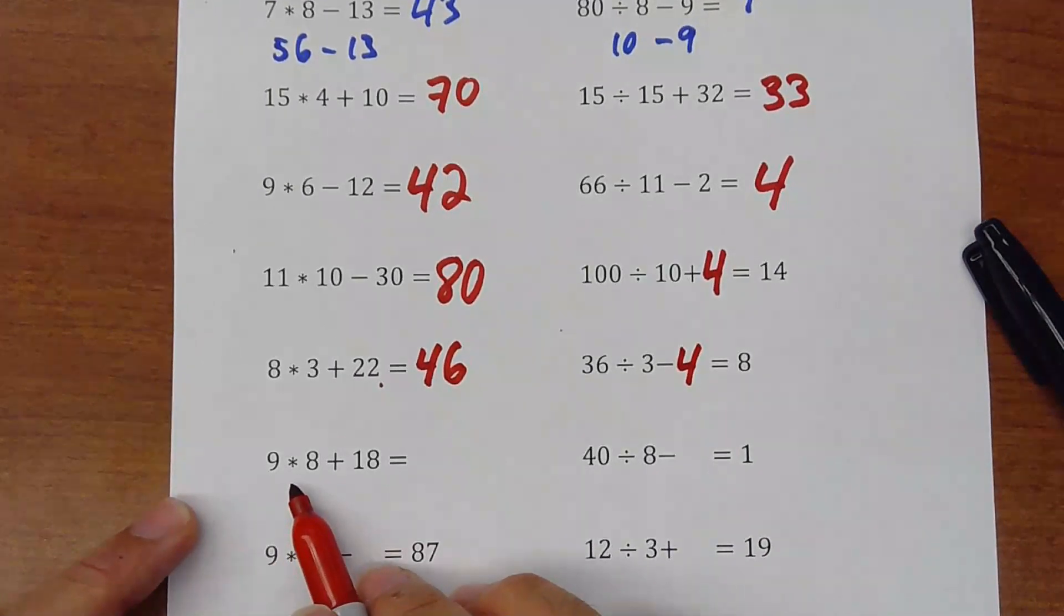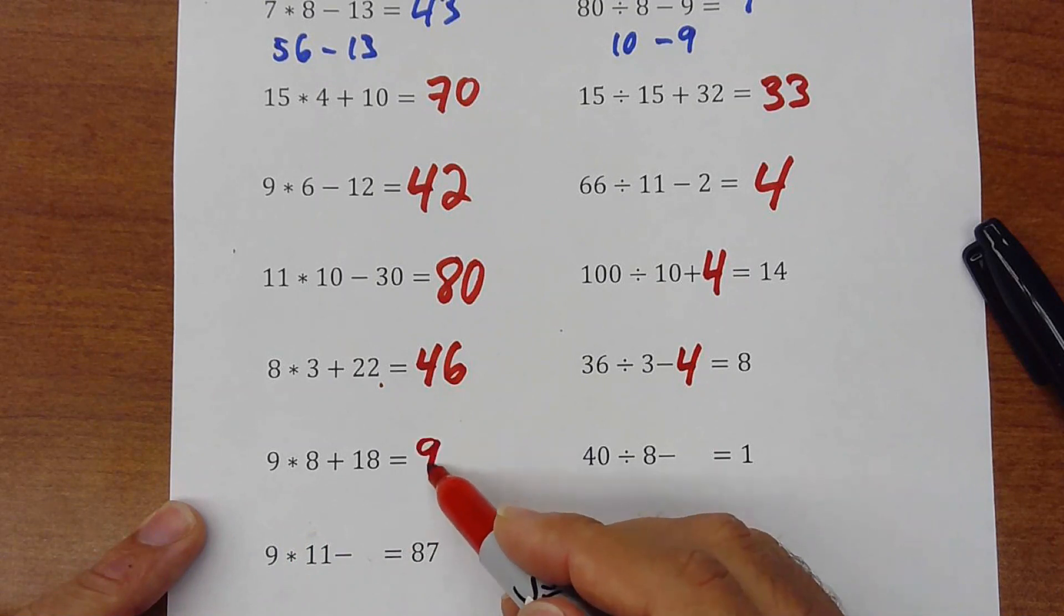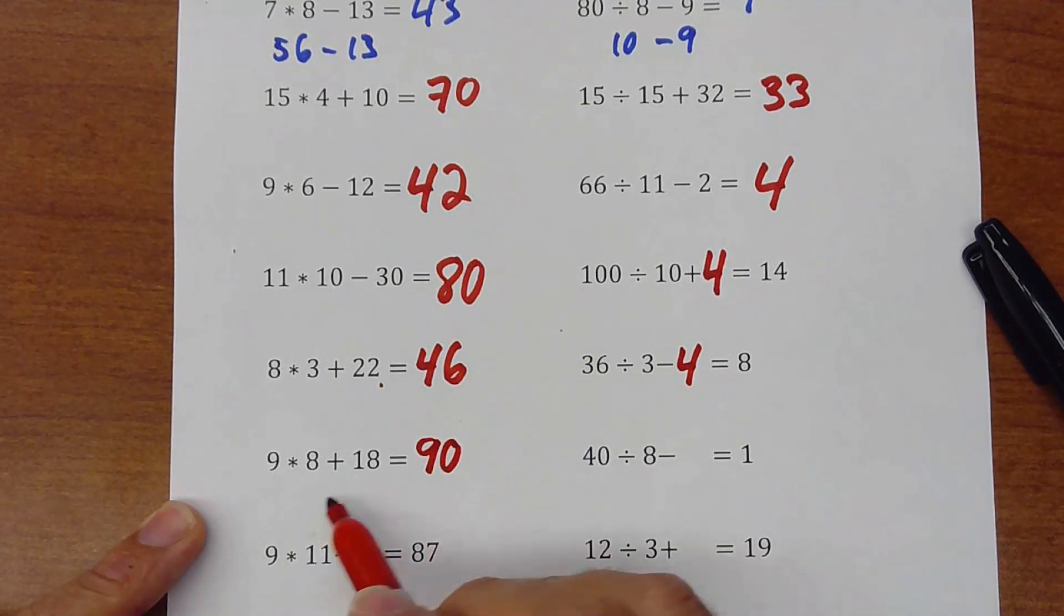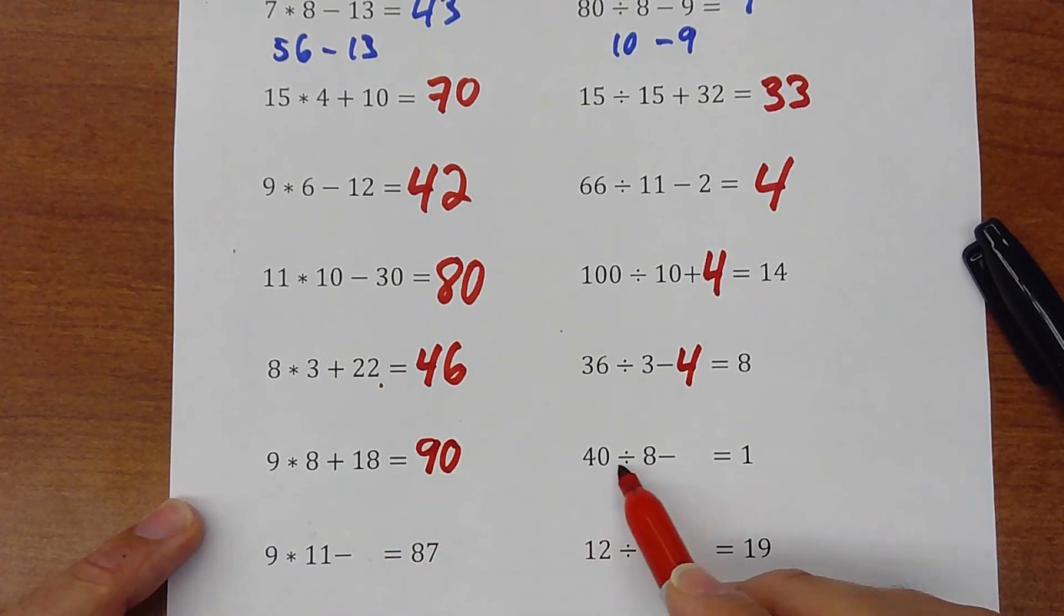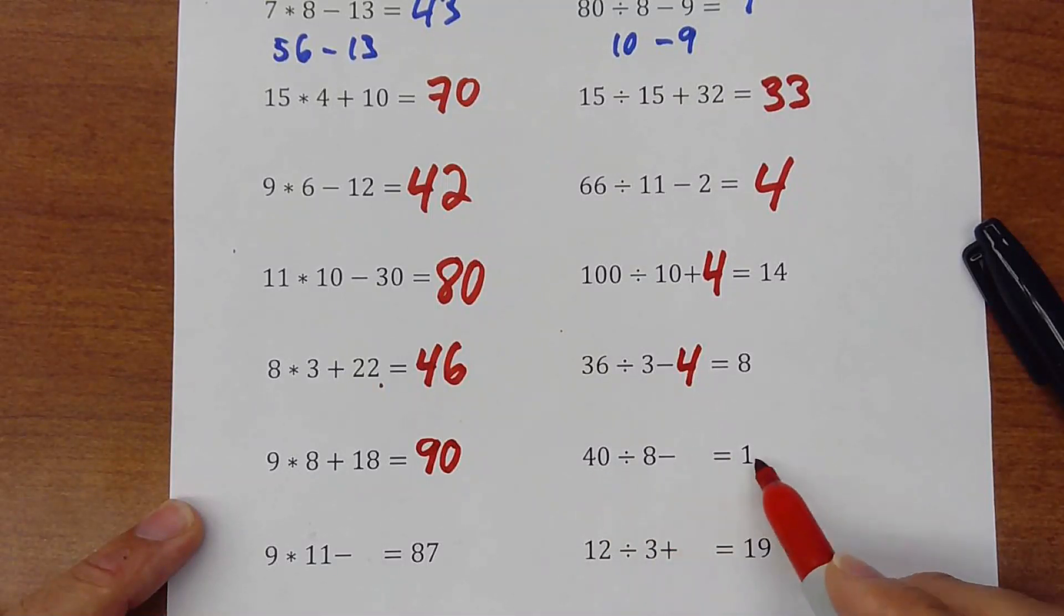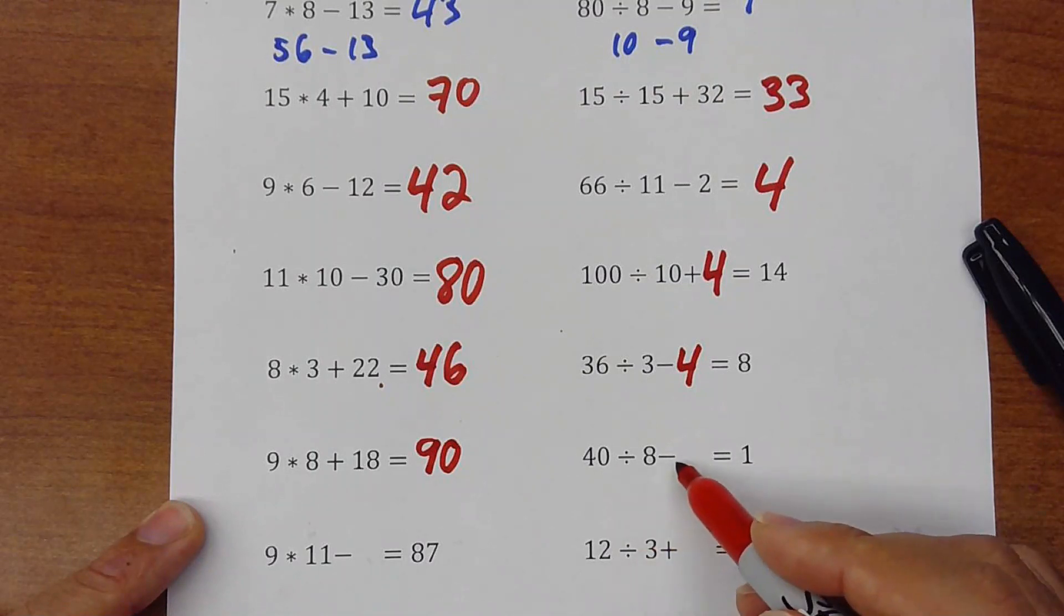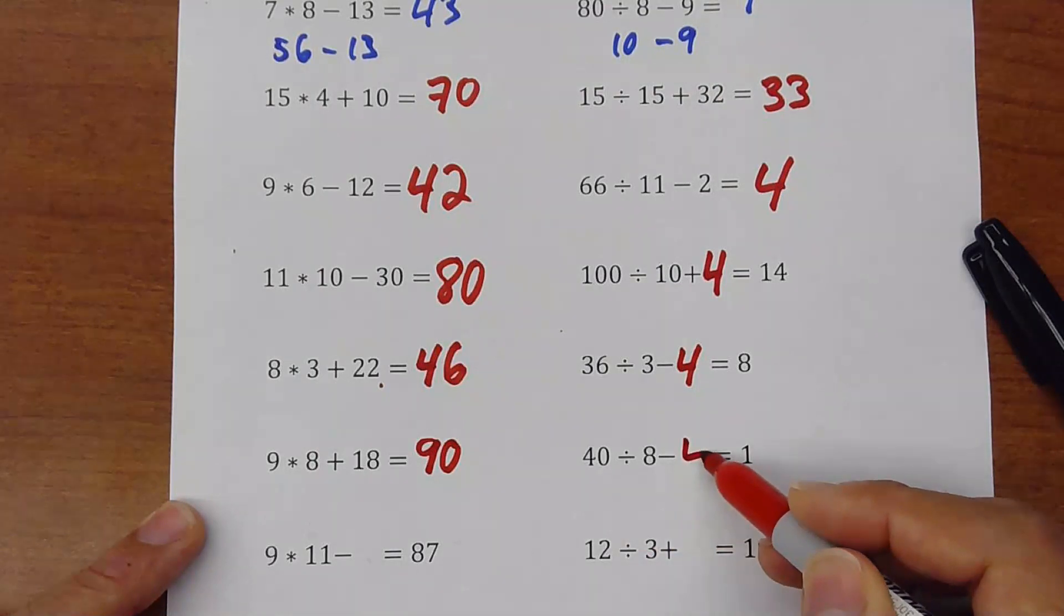Here, 9 times 8, 72 plus 18, 90. Okay, 72 plus 18, 90. Here we have 40 divided by 8 is just 5 minus something is 1. So that something will be 4. So 5 minus 4 equals 1. There's a 4 here.